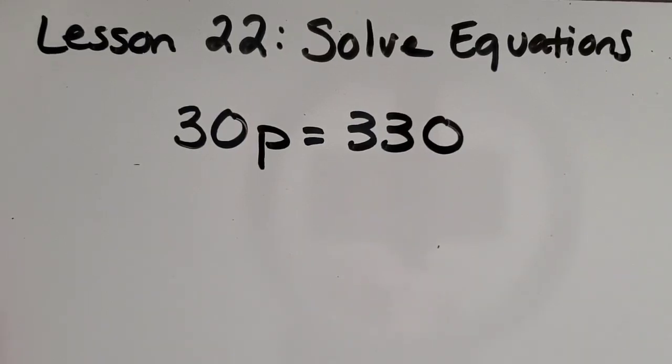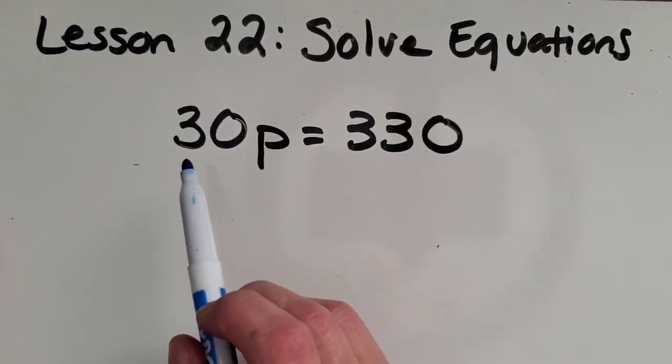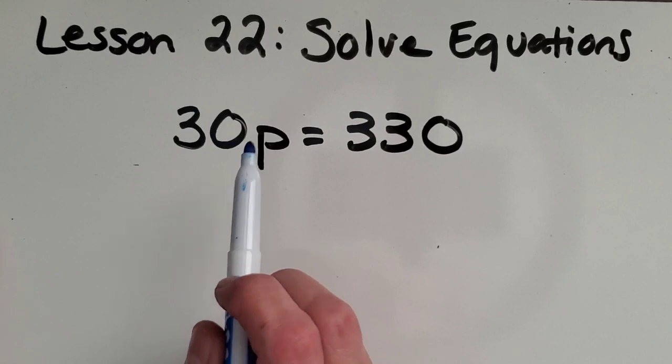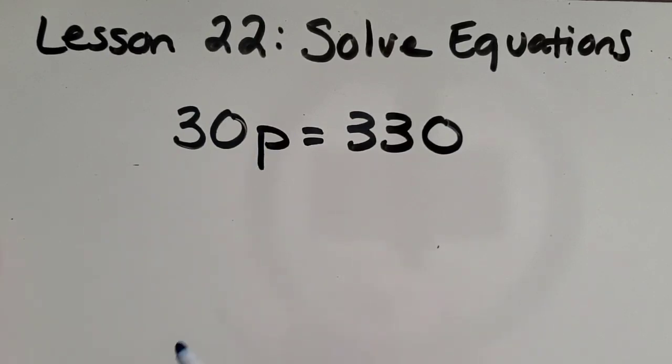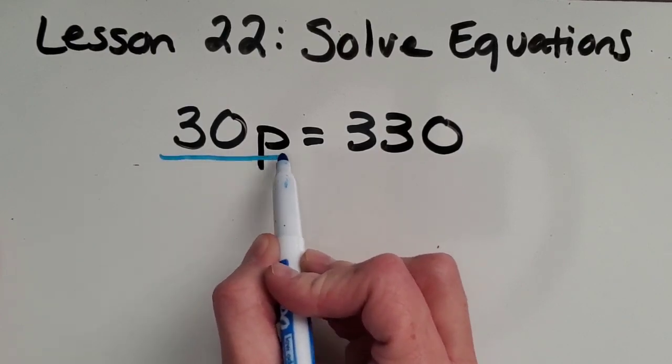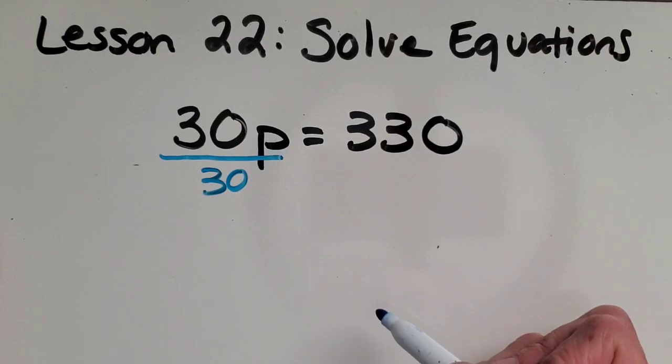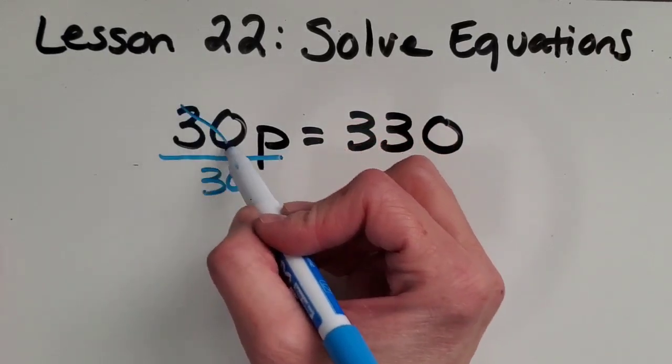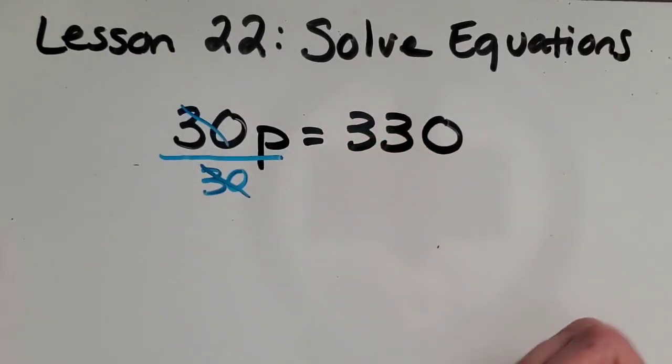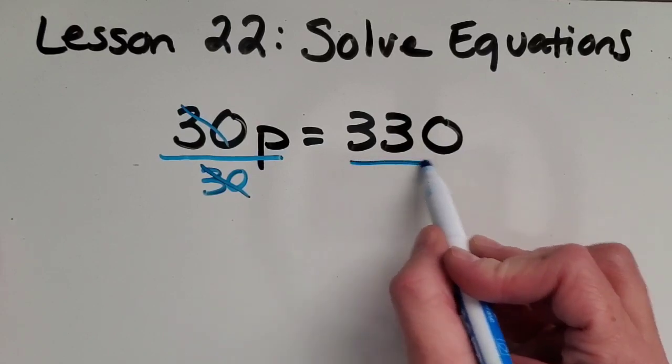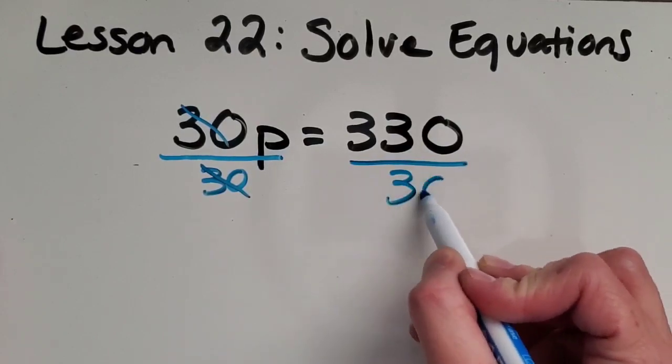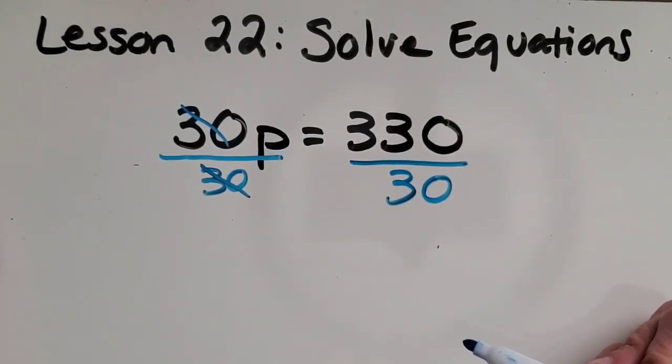There's also another way to solve this. What is the opposite of multiplication? Good, division. So if we divide this side by 30. Okay, it will get rid of the 30. And we can do the same thing. We've got to be balanced. Divide by 30 on this side.